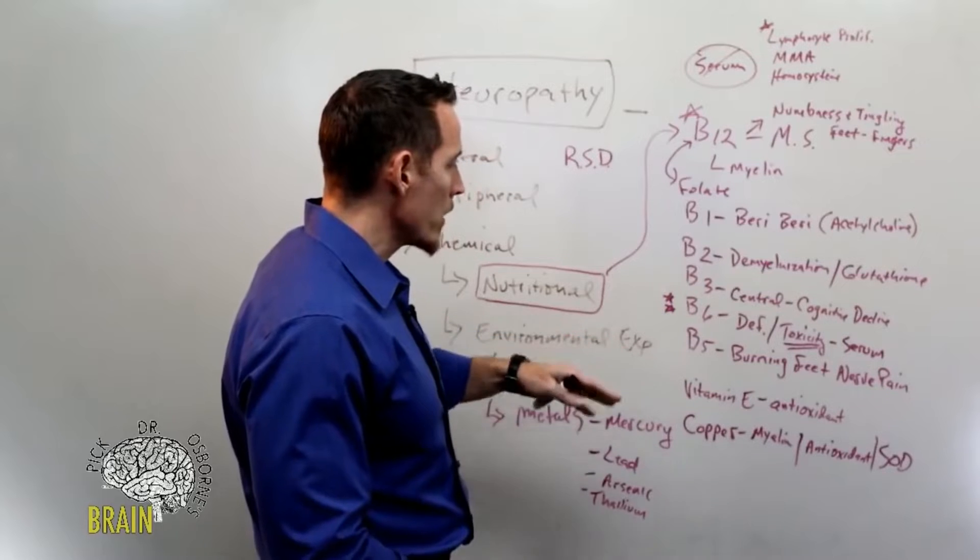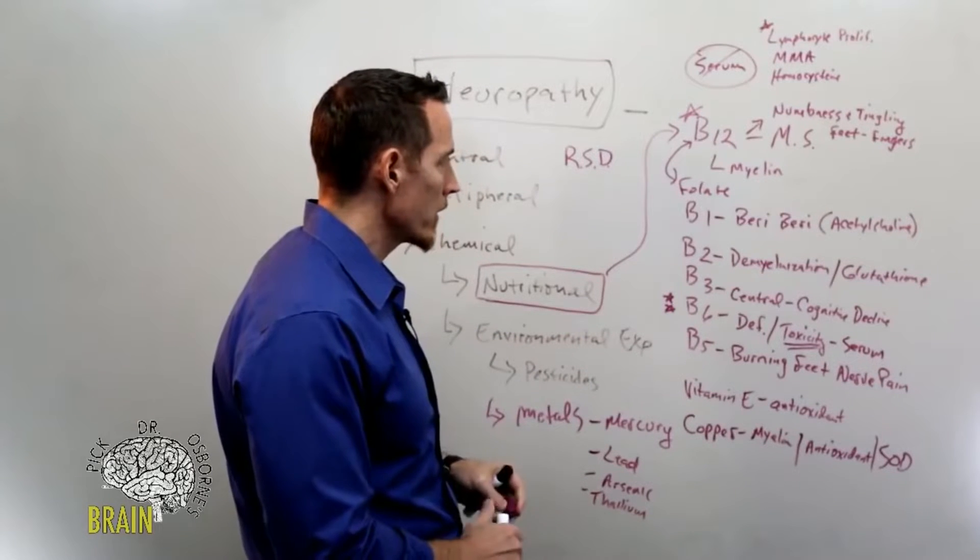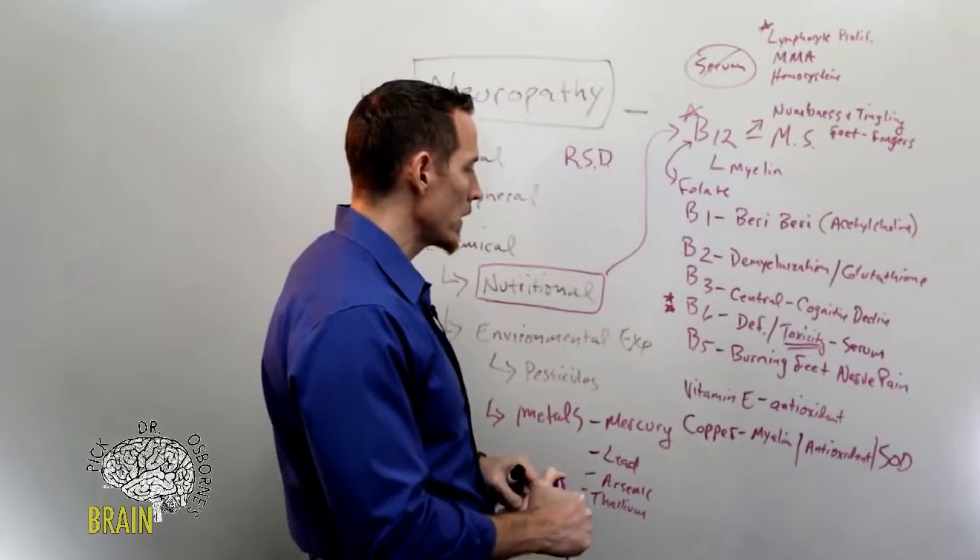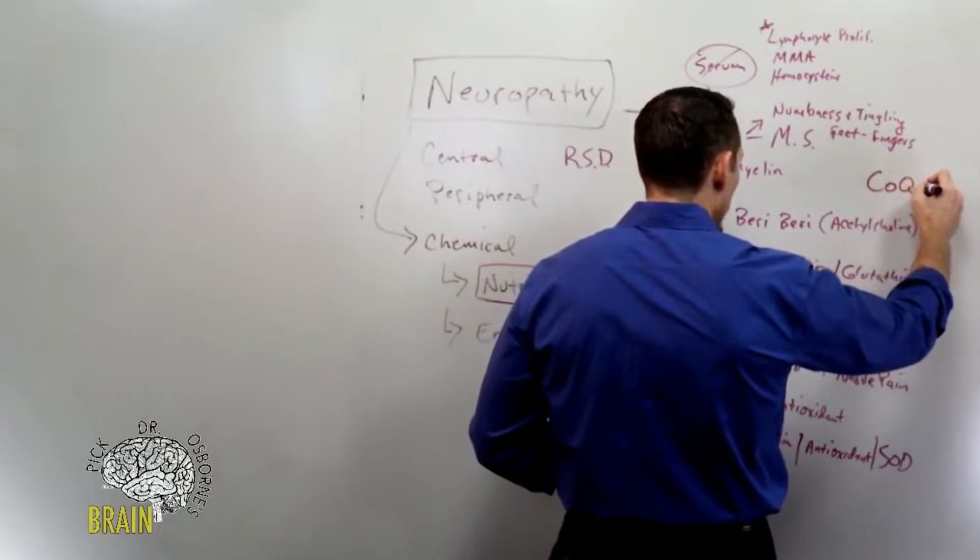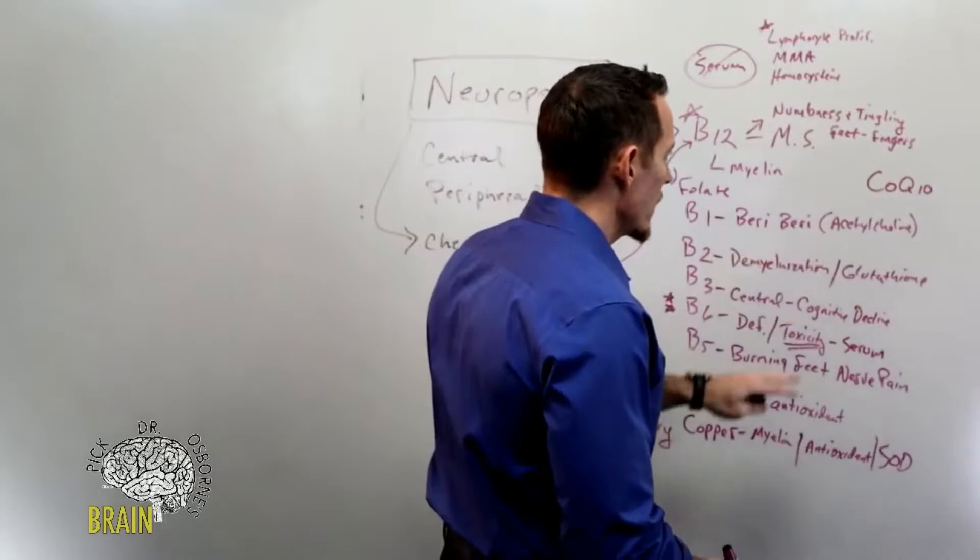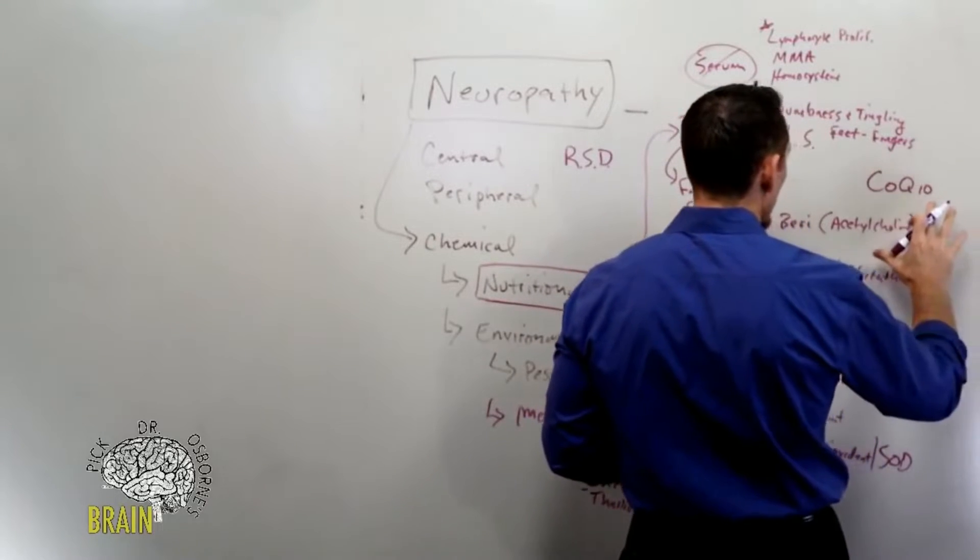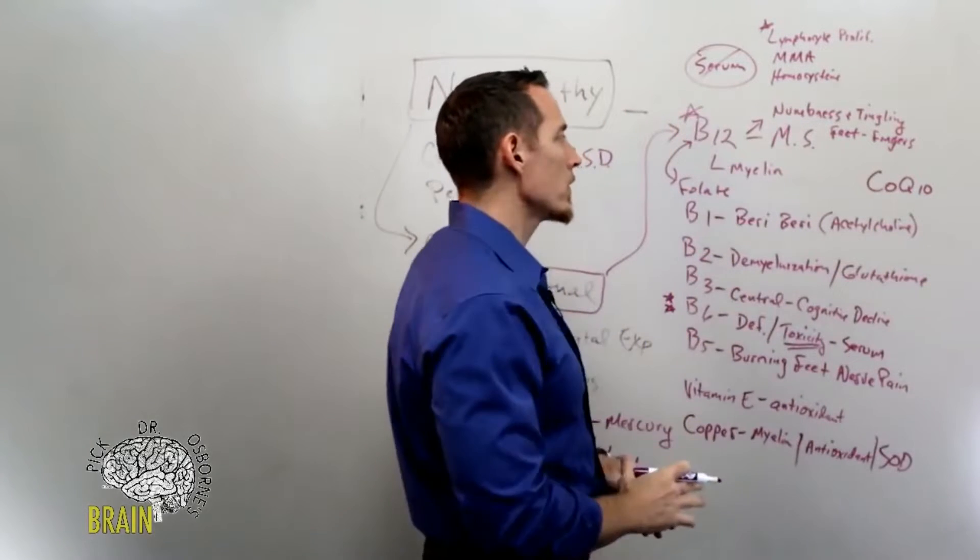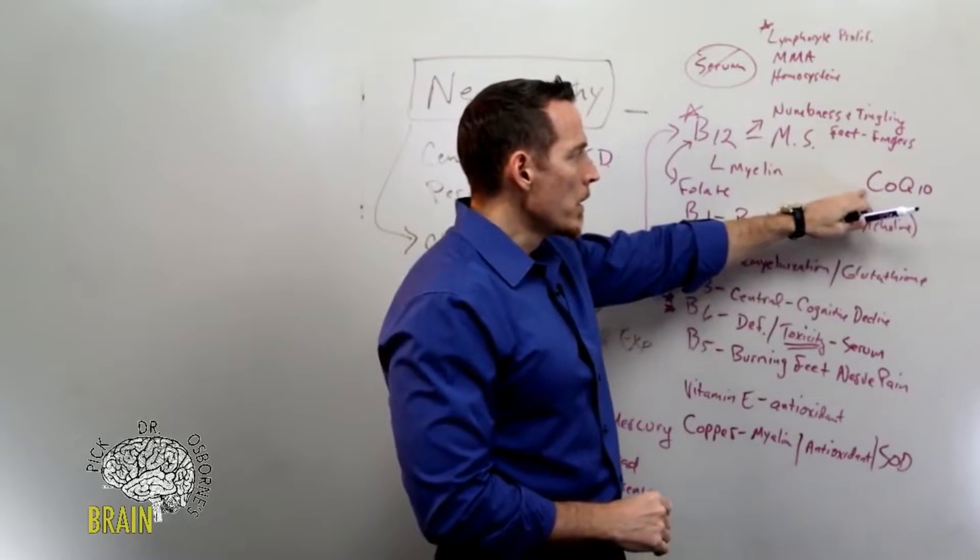Now I want to add one more to the list because I see it frequently enough, and that's CoQ10. I'm going to add it up here, coenzyme Q10. The reason we put CoQ10 in here is we know that CoQ10 deficiency can cause nerve damage. We are absolutely certain of that. There are polyneuropathies associated with it. I've seen a number of research studies and I've seen it clinically a number of times.